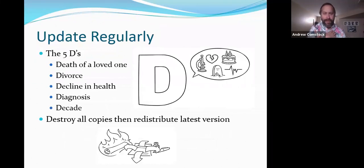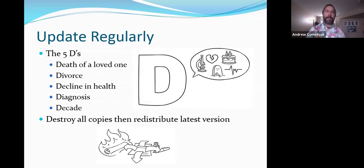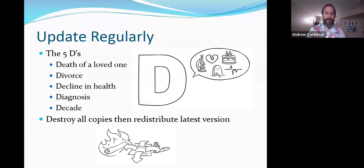You don't have to keep your personal directive the same forever. If you want to change it, just make a new one — the most recently dated one takes precedent, so destroy the old copies. Things that might trigger you to update it include the five D's: death of a loved one, divorce — which voids a spouse named as delegate so you need to reconsider — a decline in health, or a new medical diagnosis that might change your thoughts on quality of life or treatments. A good rule of thumb is also just every decade, since a lot can happen in 10 years.